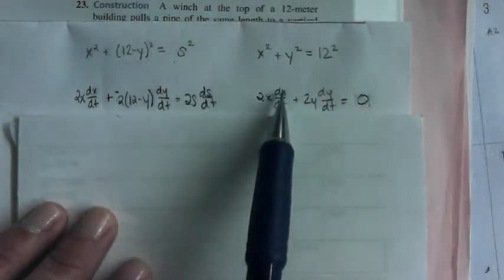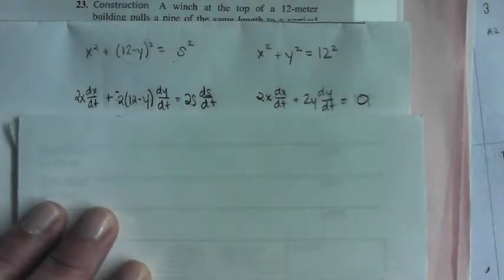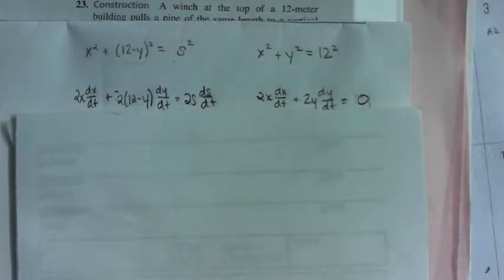On this one, 2X DX DT, 2Y DY DT, and then the derivative of 144 is just zero. So it's just a little system of equations.